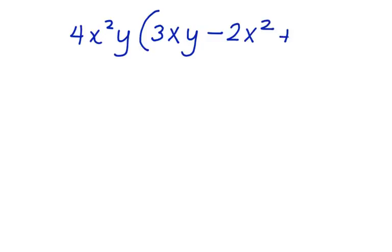Jackie is actually right. You can use the distributive property to multiply a monomial by a polynomial. Let's take a look at the problem again that she was puzzled by. We have 4x squared y times the quantity 3xy minus 2x squared plus 4x.